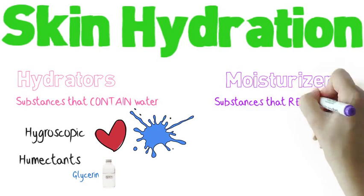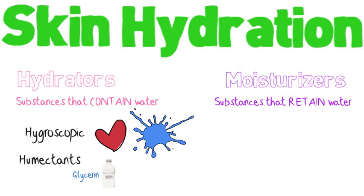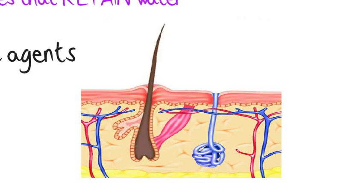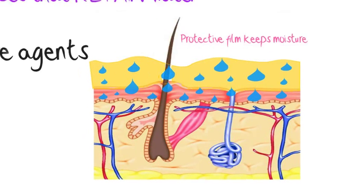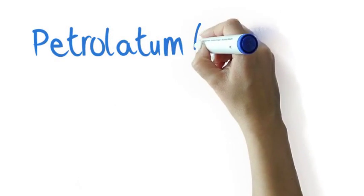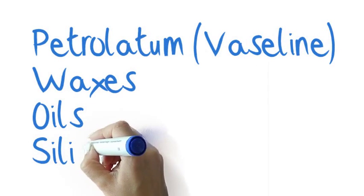Moisturizers are substances that help retain water by forming occlusive layers. These protective films help to keep moisture in place, preventing water loss. Famous examples are vaseline, waxes, oils and silicones.